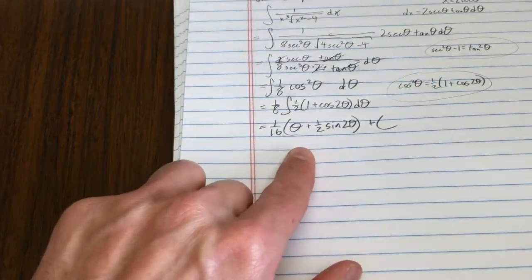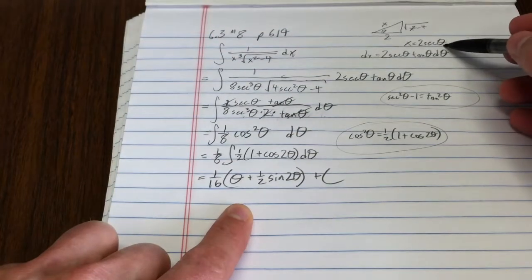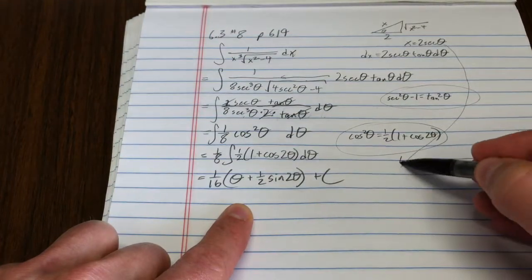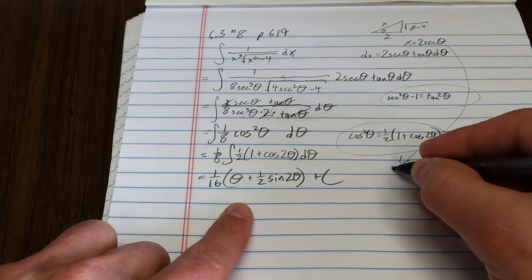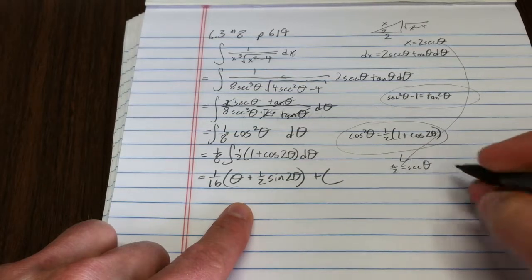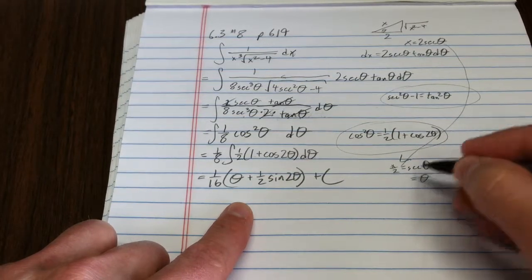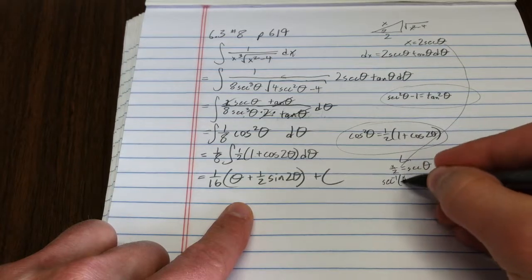Now, remember, theta is my creation. So, I have to work way back up here. X equals 2 secant theta. So, that means x over 2 equals secant theta. So, what is theta equal? Theta equals secant inverse of x over 2. Right?